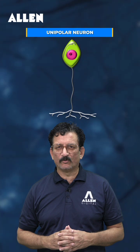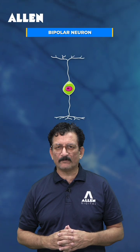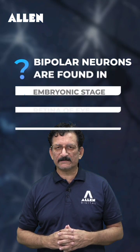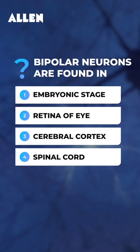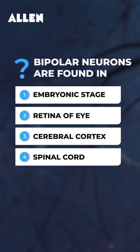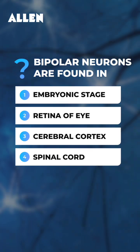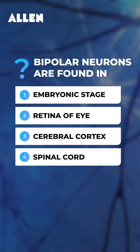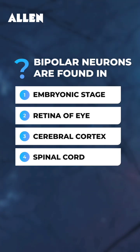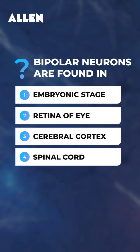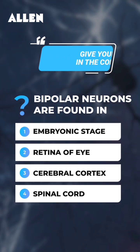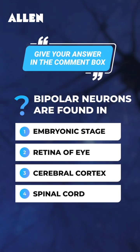Neurons are of different types: pseudo-unipolar, unipolar, apolar, bipolar, and multipolar neurons. Now here is the question for you: bipolar neurons are found in the embryonic stage, retina of the eye, cerebral cortex, and spinal cord. Please answer in the comment box.